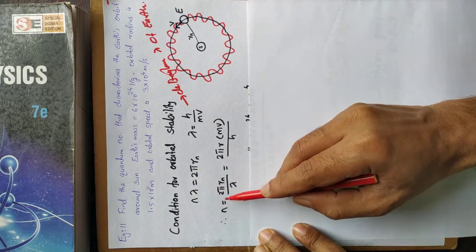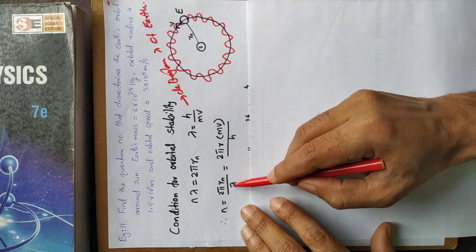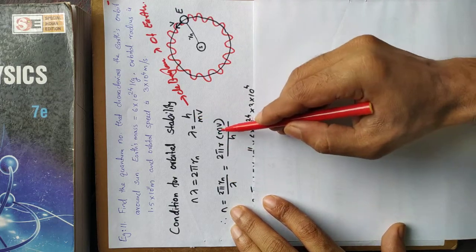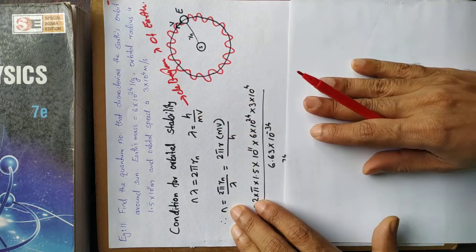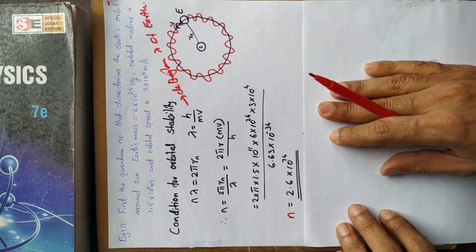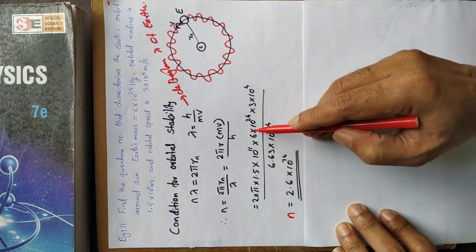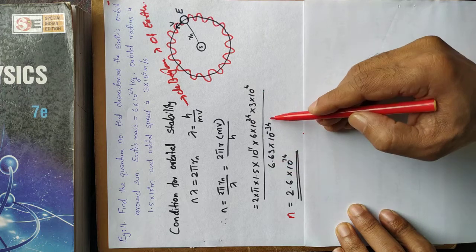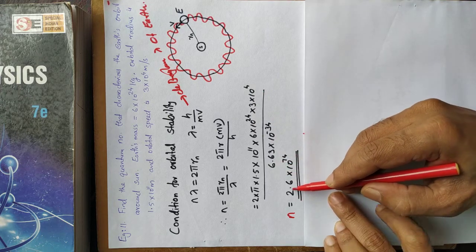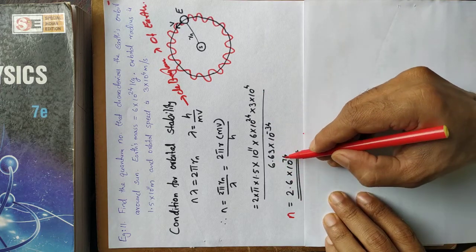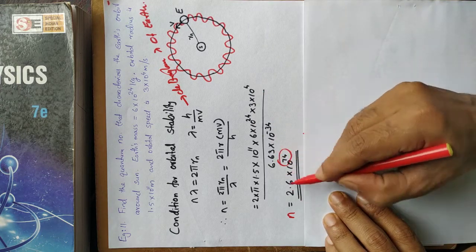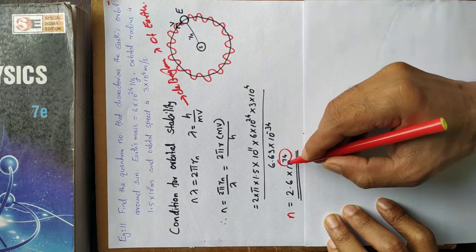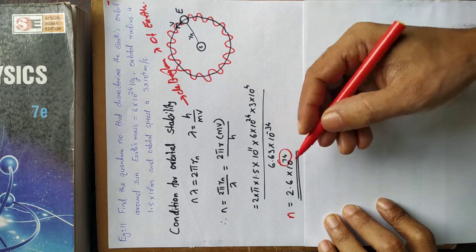The quantum number is n = 2πr_n / λ, where λ = h/(mv), so n = 2πr_n·mv/h. Substituting the values of radius, mass, and speed of Earth, we get n ≈ 2.6 × 10⁷⁴. This is a huge number — the quantum number corresponding to Earth's orbit is of the order 10⁷⁴.